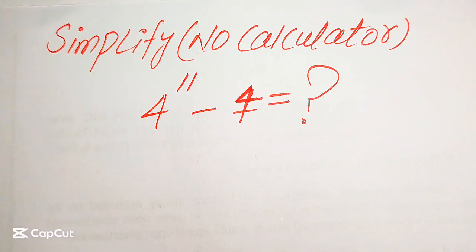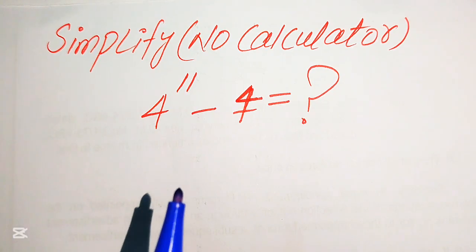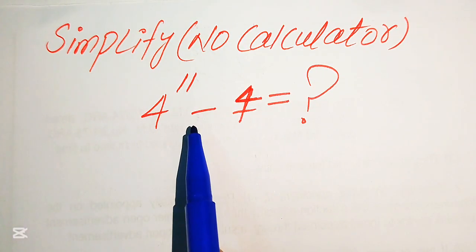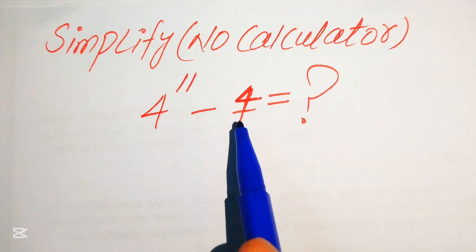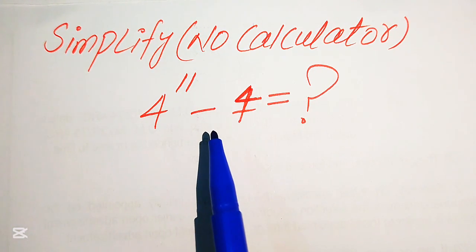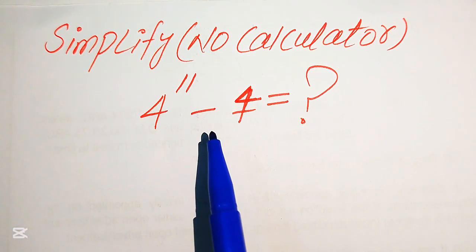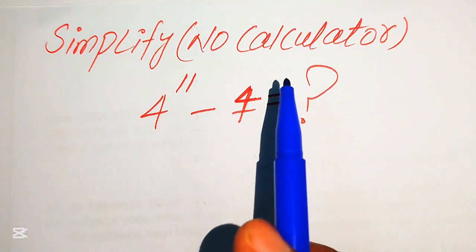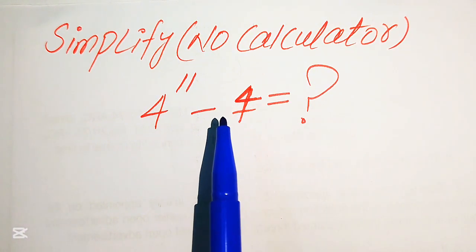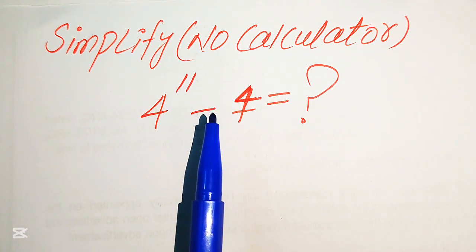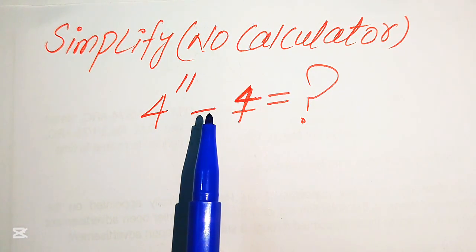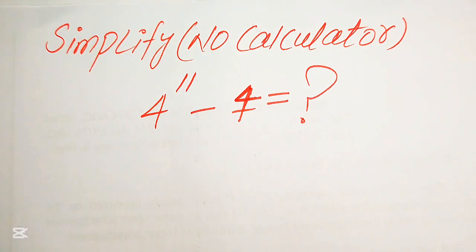Hello everyone, how to simplify this nice algebraic expression. So if we have 4 to the power of 11 minus 4, we need to simplify this algebraic expression without using the calculator. Calculator is not allowed in this problem, which means that we will show all of the working here.